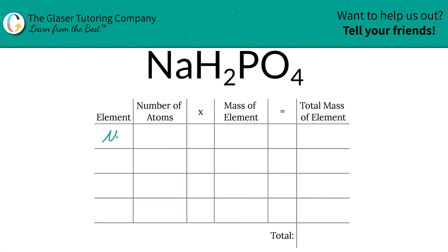The first step is to write the elements we see in the compound: sodium, hydrogen, phosphorus, and oxygen. Next is to identify the number of atoms of each element, and that's where the subscripts come into play. If you don't see a subscript, just put in a one. So there's one at the bottom of sodium, there's also one at the bottom of phosphorus. We got one sodium, two hydrogens, one phosphorus.